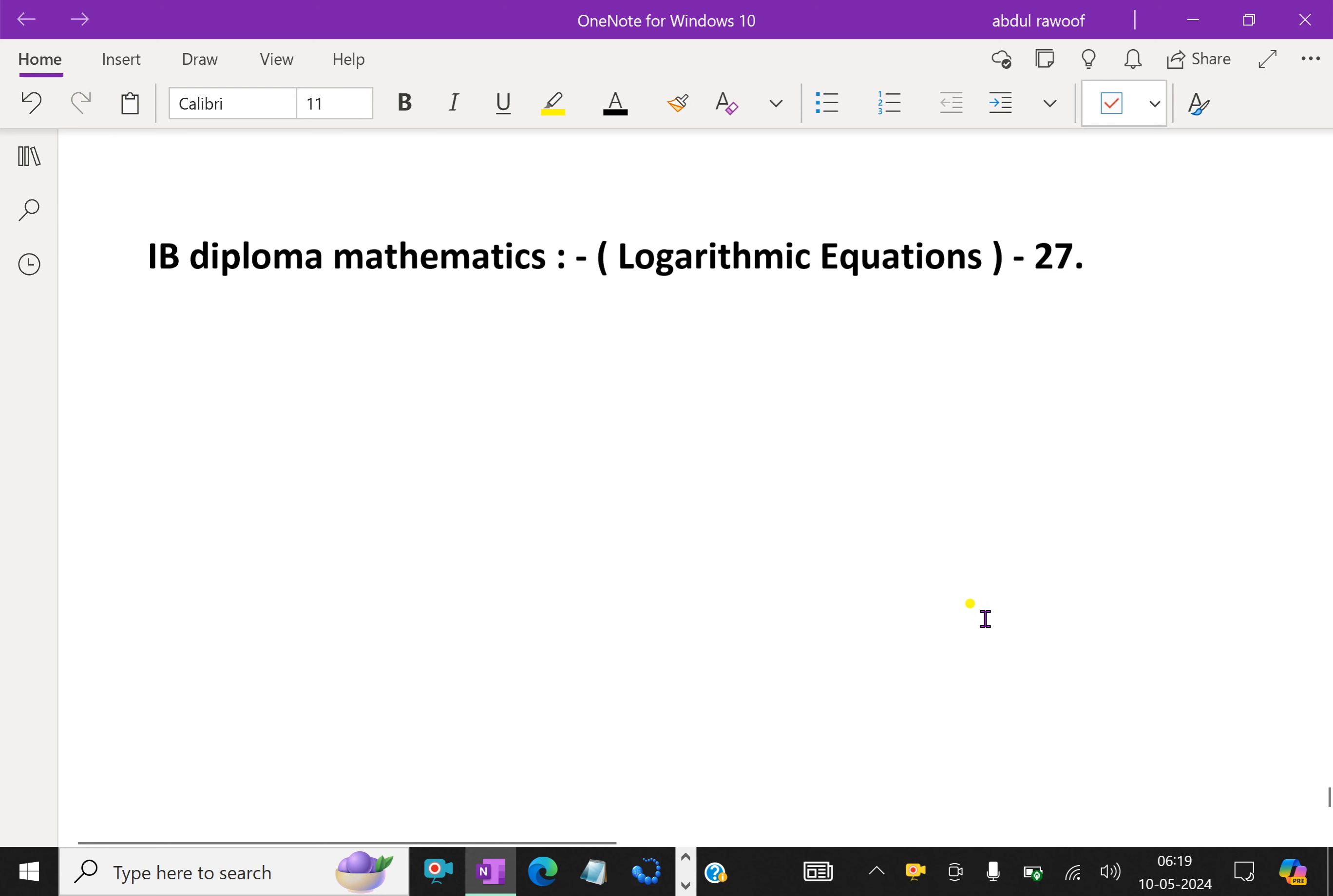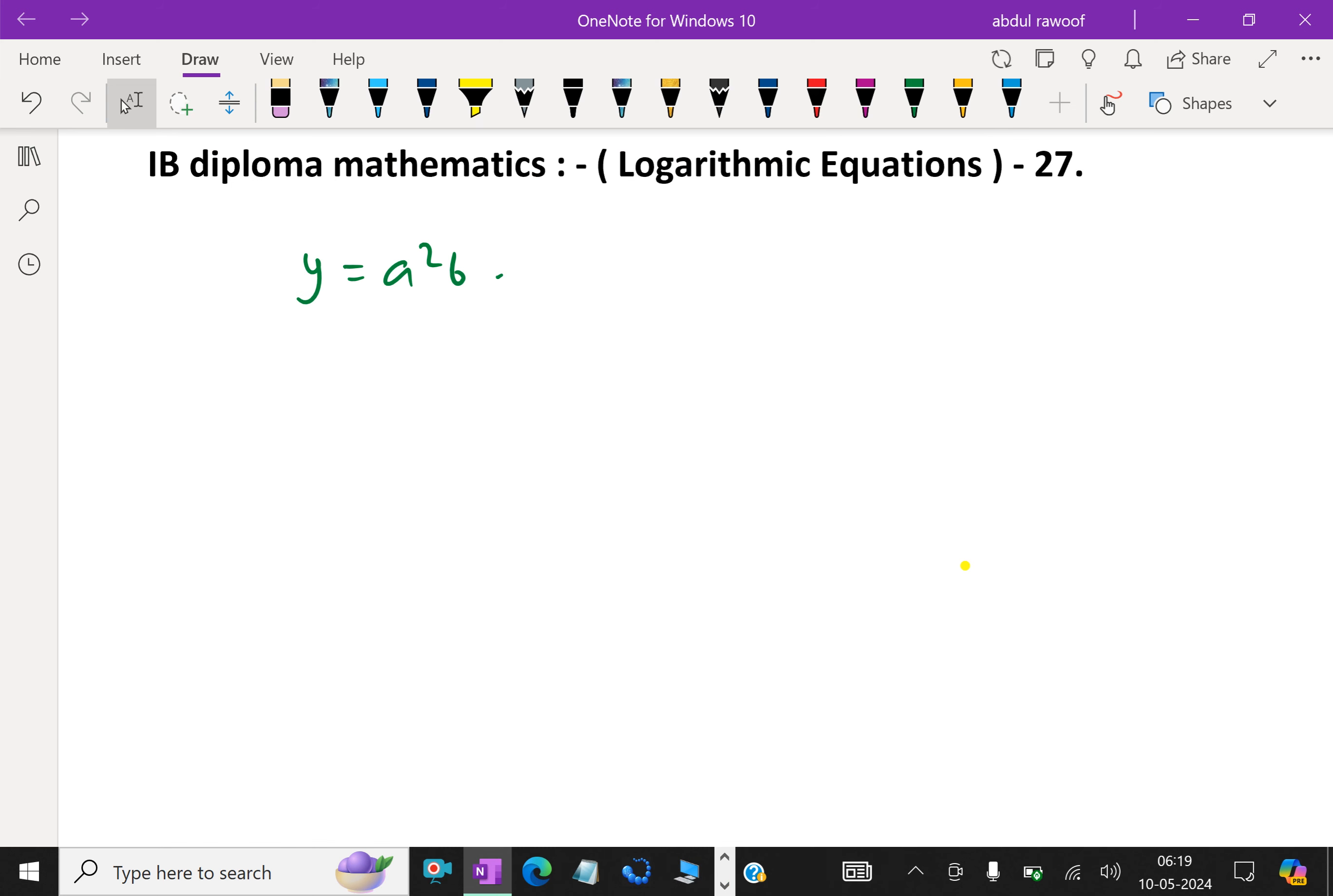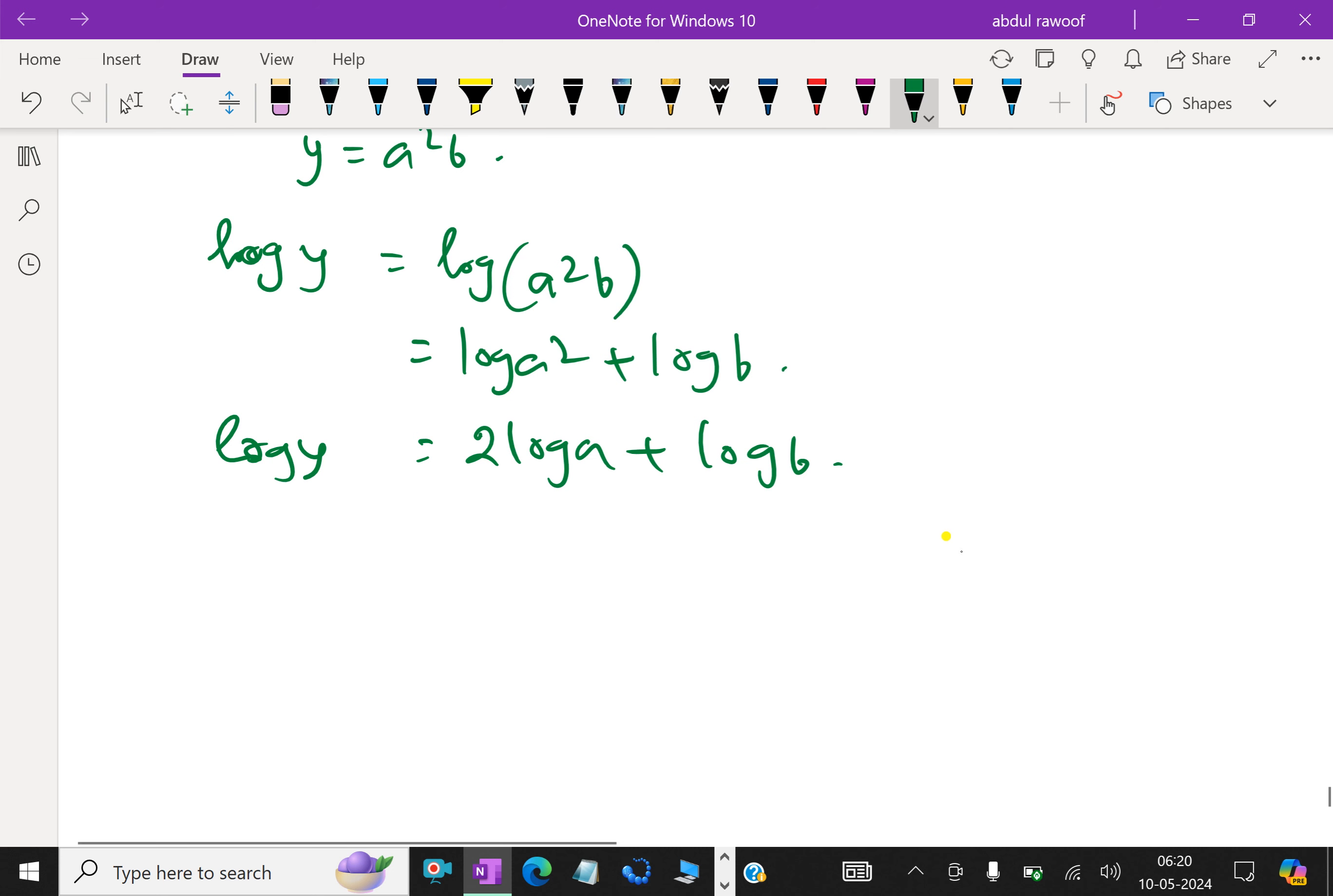Consider this: the expression y equals a squared b. How to express this as a logarithmic equation in base 10? That means taking log of both sides. Log y equals log of a squared b, which equals log a squared plus log b, further equal to 2 log a plus log b. This is a logarithmic equation with base 10.